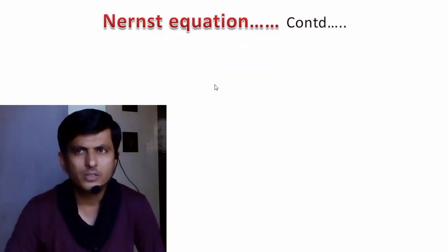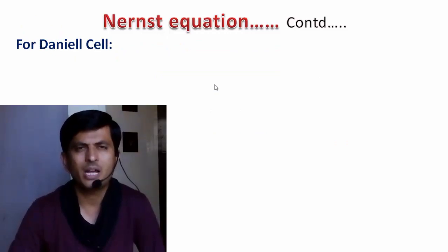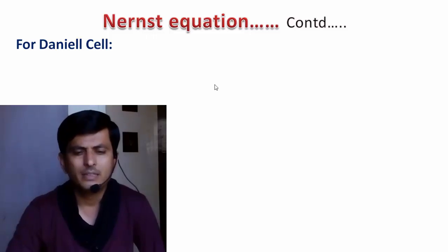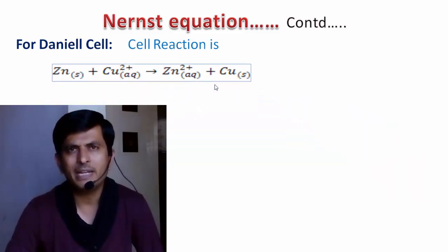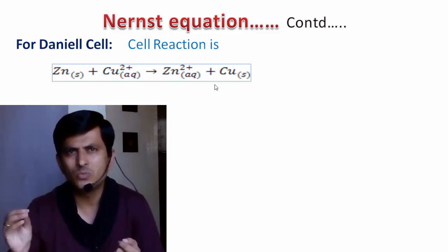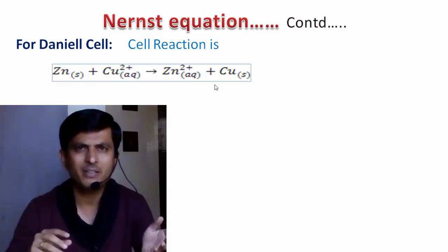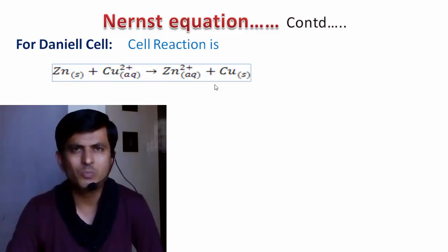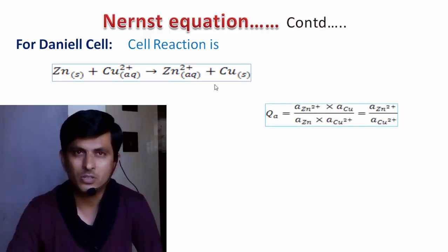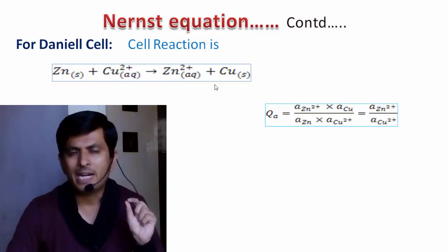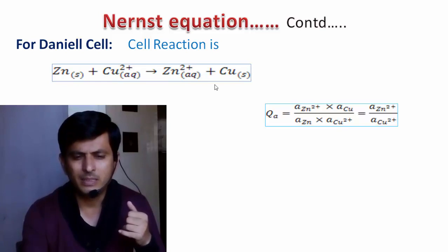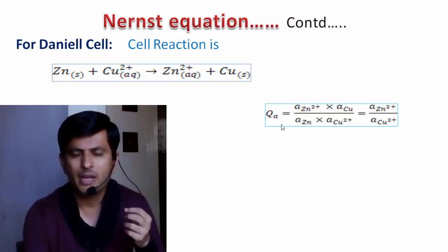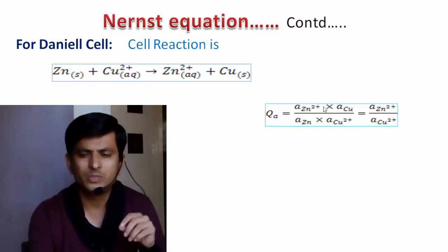Now, considering the Daniel's cell, we derive the Nernst equation for it based on the cell reaction. In Daniel's cell, zinc in the zinc compartment oxidizes to form Zn²⁺, and in the copper compartment, Cu²⁺ reduces to form solid copper. The overall reaction is: Zn(s) + Cu²⁺(aq) → Zn²⁺(aq) + Cu(s). The reaction quotient is: QA = (activity of Zn²⁺ × activity of Cu) / (activity of Zn × activity of Cu²⁺).